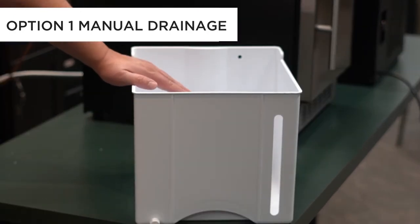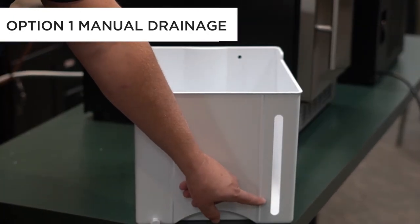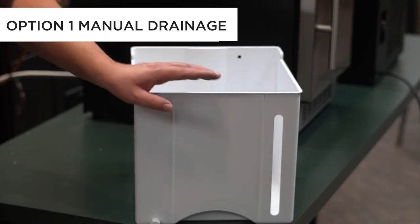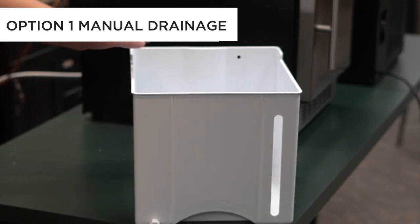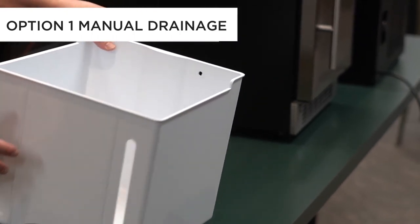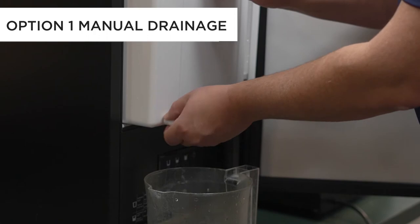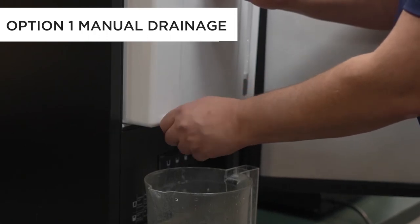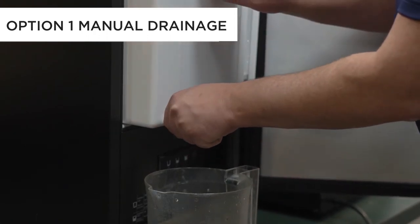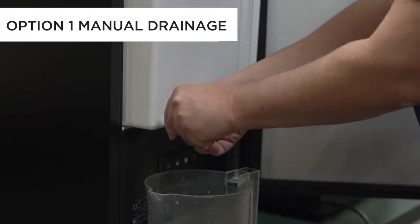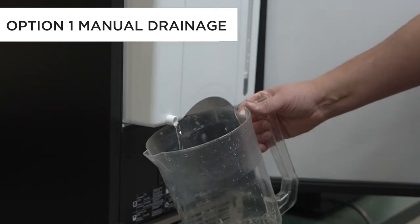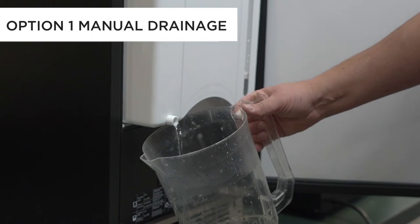As the ice melts, water will accumulate in the bucket. You can determine how much water is in the bucket from the window gauge here, and then you can simply pull it out and empty it into the sink. Or if you don't want to remove the bucket from the unit, just remove the front cap and the silicone plug and the water will come into the receptacle.